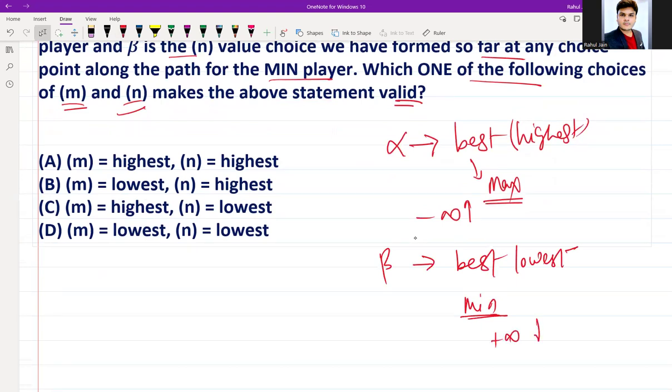These two parameters form the alpha-beta pruning concept. The goal of alpha-beta pruning is to stop evaluating the branch when we realize that it cannot possibly influence the final decision. This is done by comparing alpha and beta with each other.